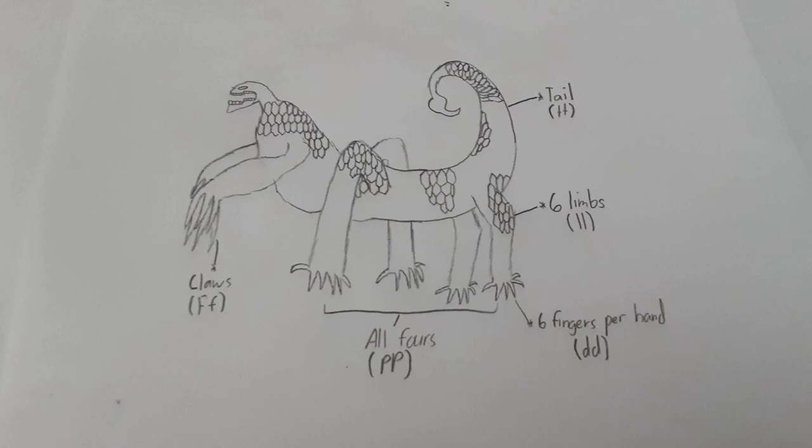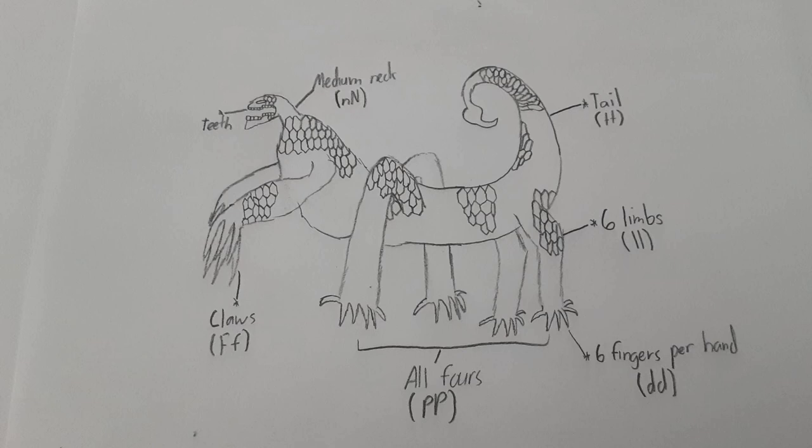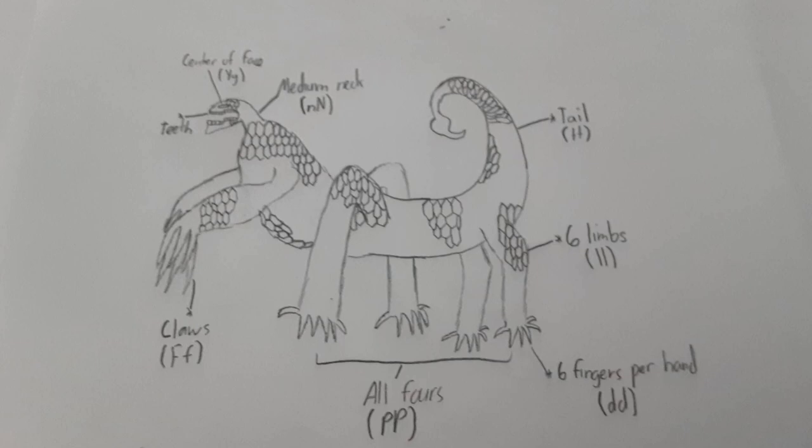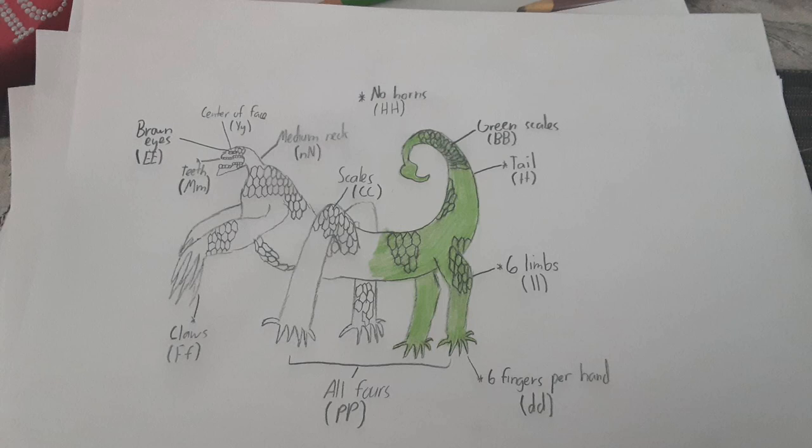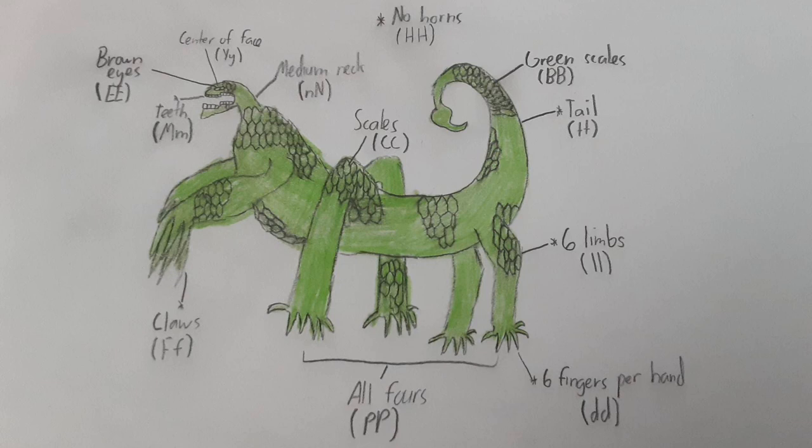So the recessive trait is 6 limbs with small LL. The heterozygous trait is the claws with big F and small F. And the homozygous dominant is the brown eyes with two big E's.